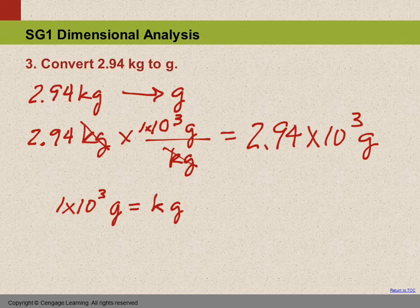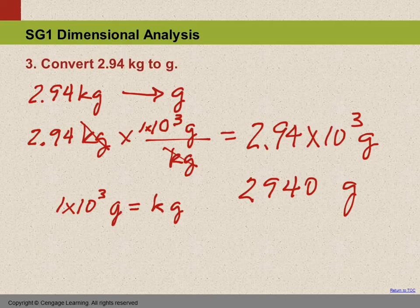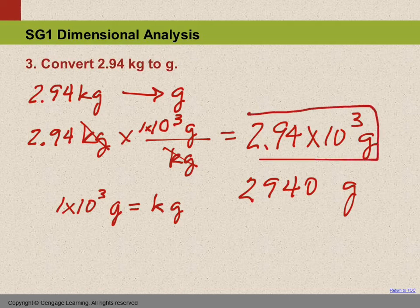Now, your calculator might also show you 2940. That's kind of a marginal answer, because there's a trailing zero and there's no decimal point, so it's a little ambiguous. But in this situation, it ends up being okay but not ideal. So this is your best answer.